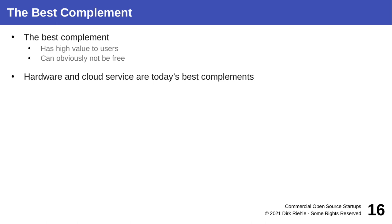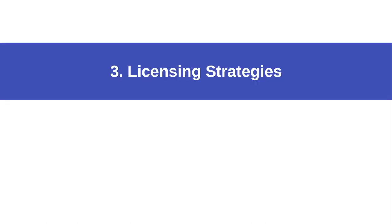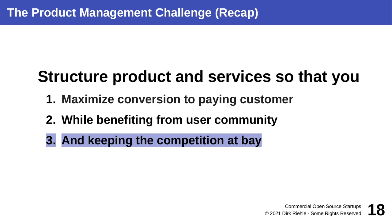The best complements are those with high value to users where users don't feel they should get them for free — and these days that is clearly the cloud. Operating software in the cloud incurs hardware costs, storage, and computational costs. Users intuitively understand they cannot get that for free. They may quibble with the prices, but they don't question that some price must exist. This is why we now see open source companies taking a cloud strategy.